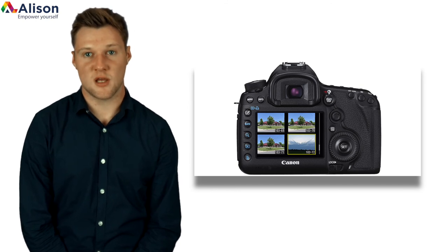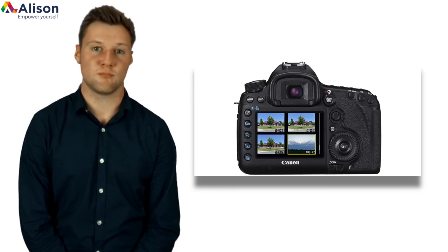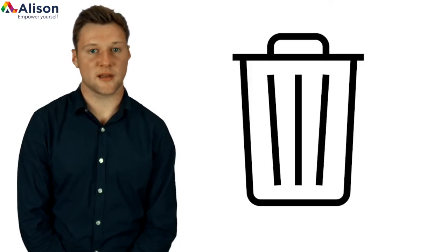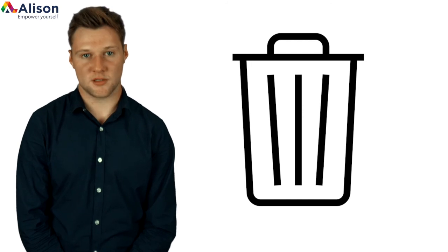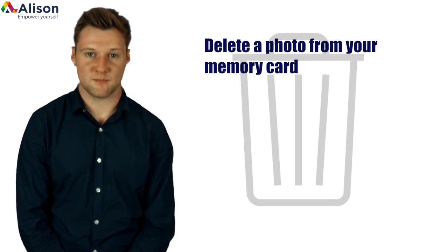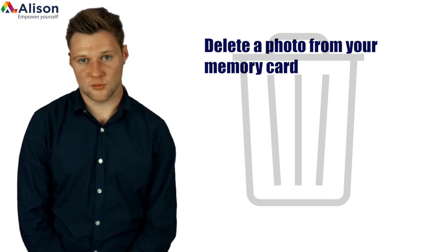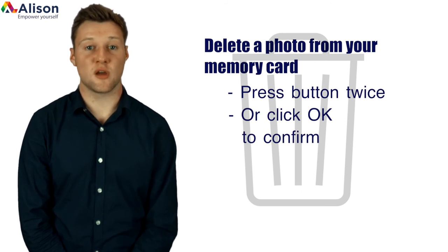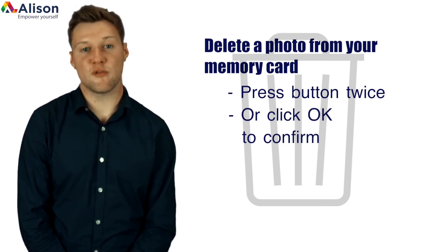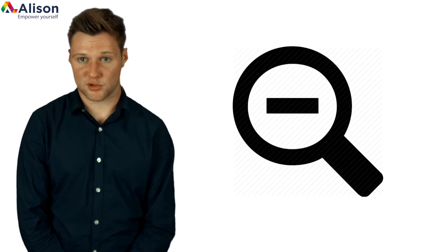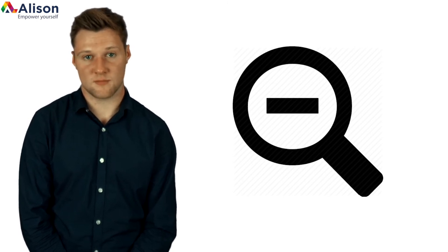There are also cameras that allow you to use this button to magnify a live view image. The delete button is denoted by a universal trash can icon, so it is the most identifiable button on a camera. If you press this button, it will allow you to delete a photo from your memory card during image playback. No matter which camera you use, you will have to press this button twice, or another button such as OK, just so you can confirm your decision. This prevents you from mistakenly deleting your work.